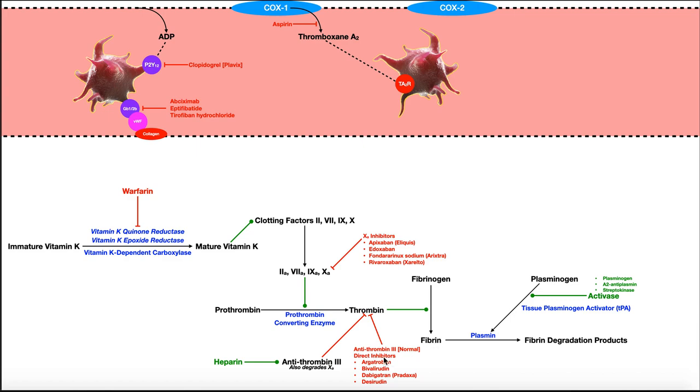But there's also direct inhibitors of thrombin. And these are the drugs shown right here. The most common one is Pradaxa. So Pradaxa is an inhibitor of thrombin and therefore if you inhibit this enzyme, you get less fibrin, less clots.